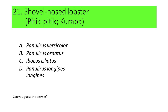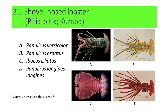If not, here are the photos. A. Panoleros versicolor, B. Panoleros ornatus, C. Ibacus ciliatus, and D. Panoleros longgipes. Can you now guess the species? If not, here's another hint. The carapace of this species is rounded in dorsal view. If your answer is C or Ibacus ciliatus, you're correct.